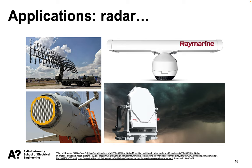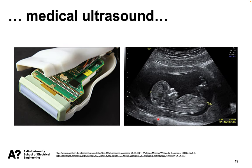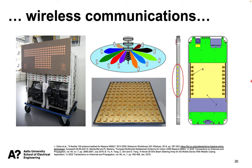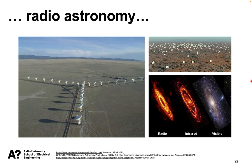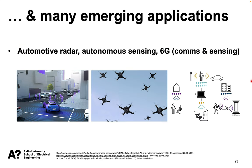Typical applications include radar — both military and civilian — medical ultrasound imaging such as for pregnancy monitoring, wireless communications where increasingly many antennas appear not only at base stations but also in user devices, and microphone arrays in conference room loudspeakers to selectively enhance a speaker's voice. In radio astronomy, large radio telescopes in deserts use radio frequencies to capture images. Exciting emerging applications include autonomous sensing, automotive radar, and future wireless systems that integrate sensing and communications more tightly together.